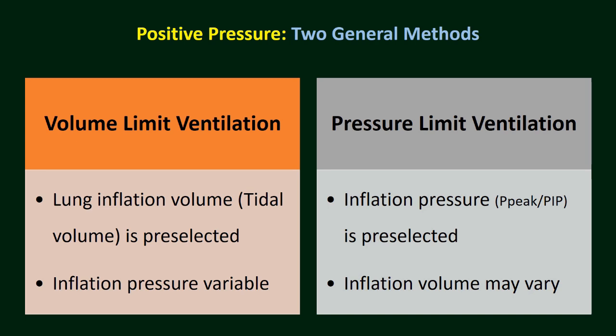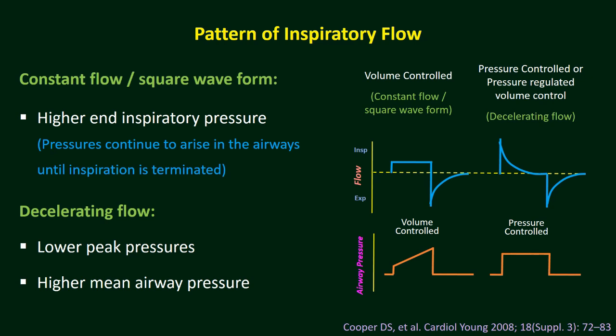There are two general methods of mechanical ventilation: volume limit or pressure limit ventilation, popularly known as volume control or pressure control. In volume limit ventilation, lung inflation occurs at a pre-selected tidal volume and the inflation pressure is variable, depending on lung condition. If there is loss of lung volume due to pneumonia, pneumothorax, atelectasis, or pleural effusion, then inflation pressure will be high. In pressure limit ventilation, the inflation pressure is pre-selected and the lung is inflated at a pre-selected PIP. If there is reduced lung volume, tidal volume delivery would be low at the same peak pressure.